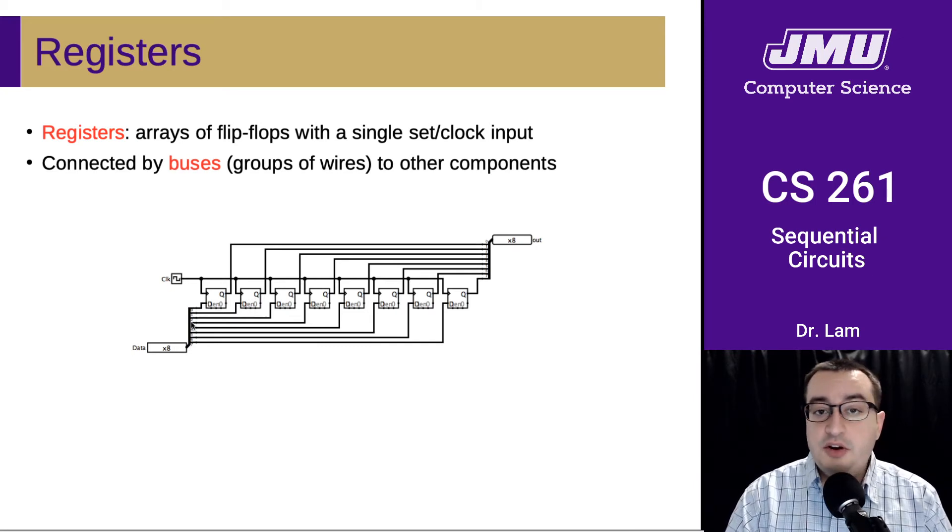So these lines that are coming in are used to set the register values, and these lines coming out are used to read the register value. And these registers are connected by these groups of wires or these buses to other components.